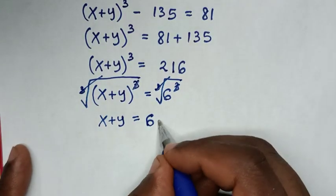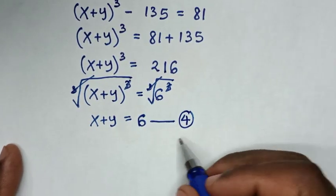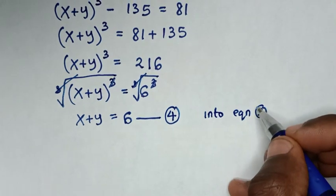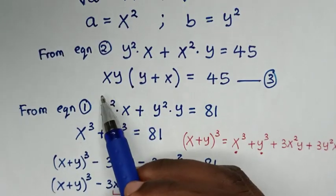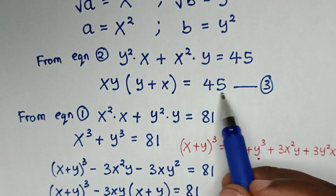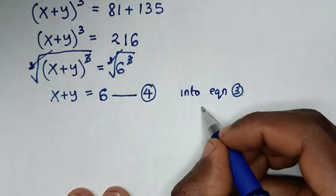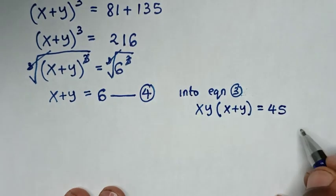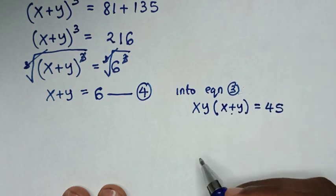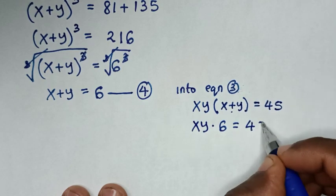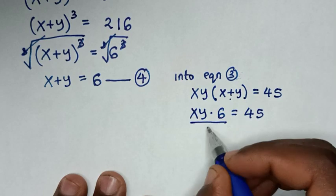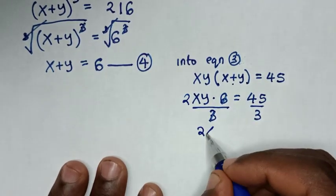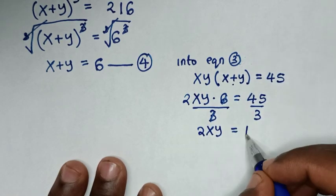Then we let this equation 4. We substitute equation 4 into equation 3. Equation 3 is xy(y + x) is equal to 45, so xy times (x + y) is equal to 45. Since x plus y is 6, we substitute 6 here: xy times 6 is equal to 45. Then we divide both sides by 3: 2xy is equal to 15.